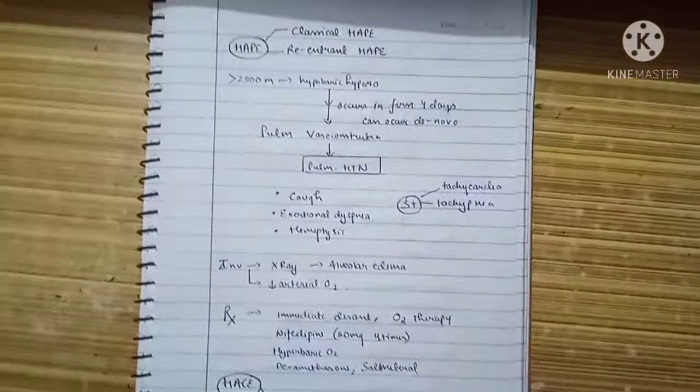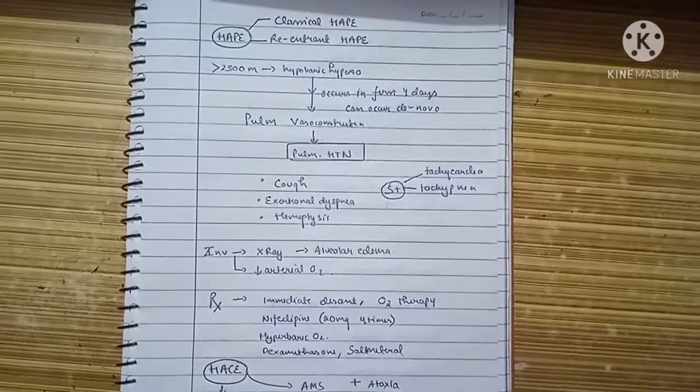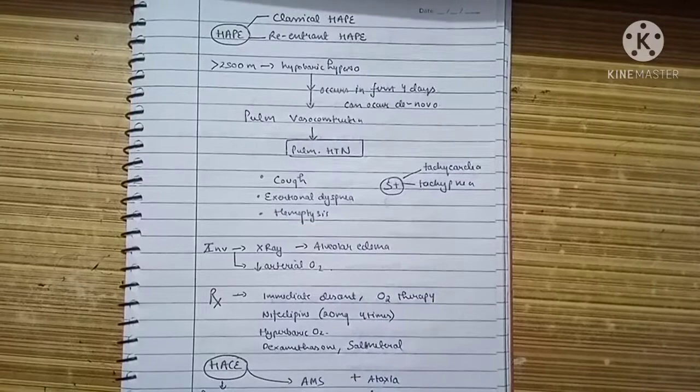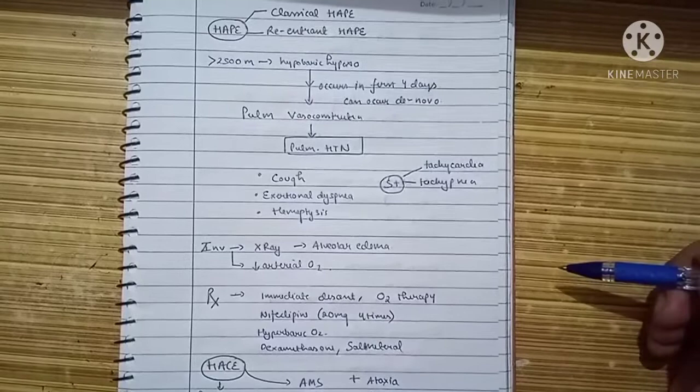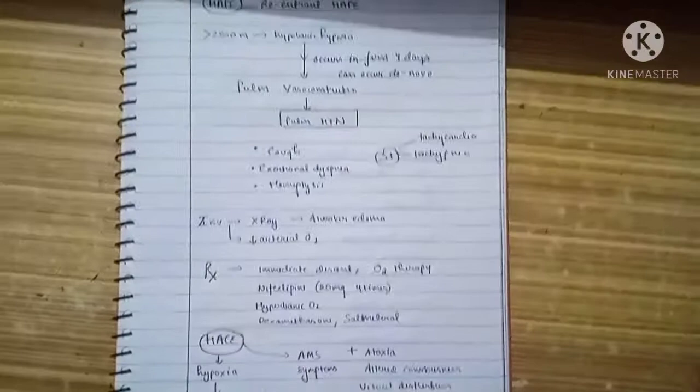On investigation, you'll see alveolar edema on X-ray and raised arterial oxygen. Treatment includes immediate descent. If the patient cannot descend immediately, we advise oxygen therapy. Nifedipine 20 mg four times a day is advised. Hyperbaric oxygen can be given. Dexamethasone and salmeterol are of some value as they help in opening the airway.